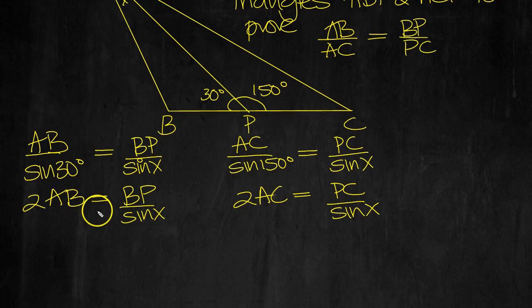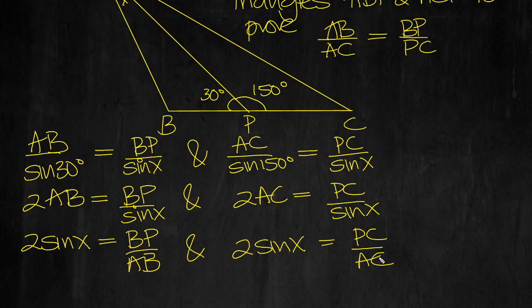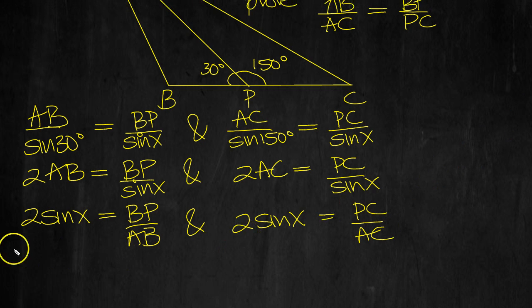So then we can move this up here and say 2 sine X is equal to BP over AB. We just move that down and move the sine X up. Also, 2 sine X here is equal to PC over AC. So what have we got? Let's set them equal to one another.